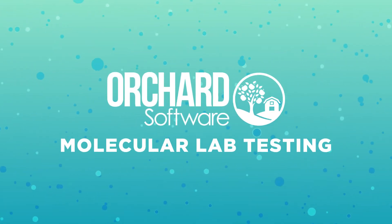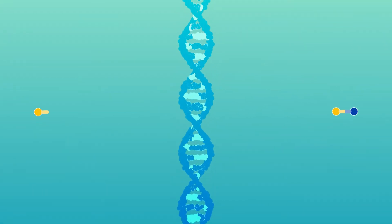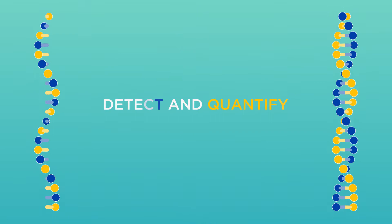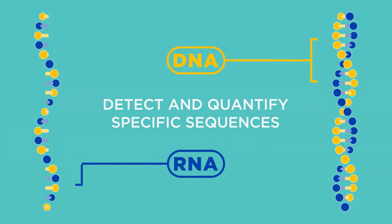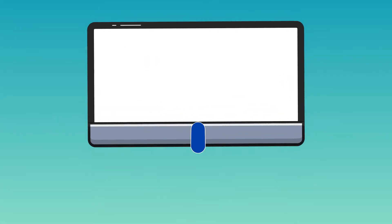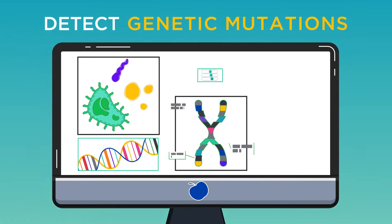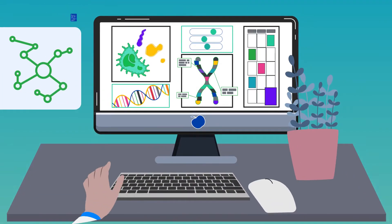What is molecular lab testing and how does it work? Molecular lab testing is a broad term that refers to the detection and or quantification of specific DNA or RNA sequences in a specimen. Molecular testing is used to detect microorganisms, genetic mutations, perform paternity tests, and much more.